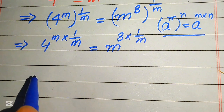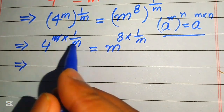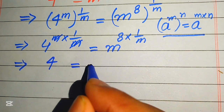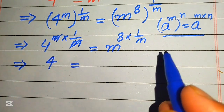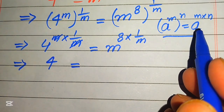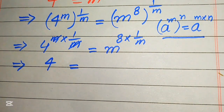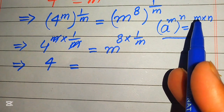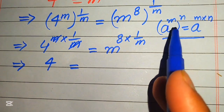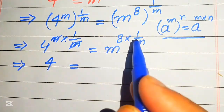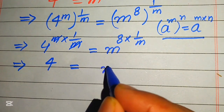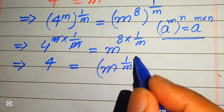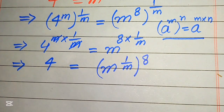Now we simplify the left hand side: m is cancelled out by m, and we get just 4. On the right hand side, we apply the exponent law in reverse — we move 1 over m inside the term, and it is written as m to the power of 1 over m, with its whole power being 8.